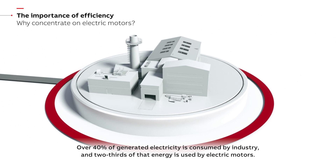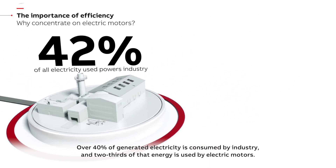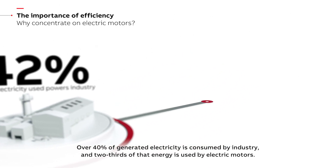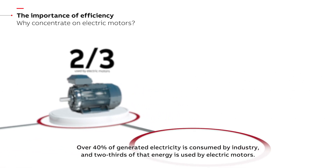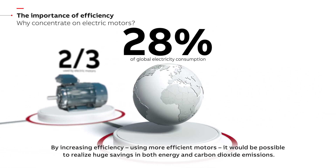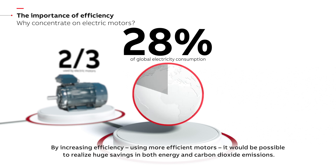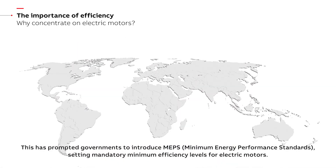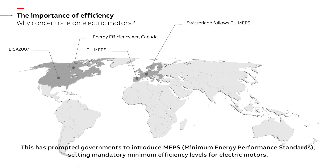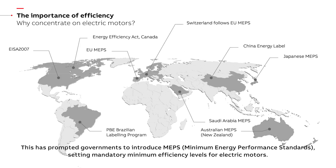Over 40% of generated electricity is consumed by industry, and two-thirds of that energy is used by electric motors. By increasing efficiency using more efficient motors, it would be possible to realize huge savings in both energy and carbon dioxide emissions. This has prompted governments to introduce MEPS — Minimum Energy Performance Standards — setting mandatory minimum efficiency levels for electric motors.